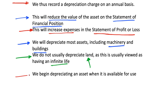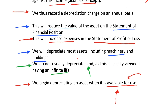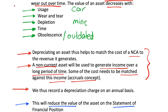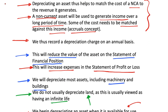The final point is when we begin depreciating an asset — and this is when it is available for use. We can often think of this as when we buy the asset and start using it, but the specific trigger is availability for use. There are circumstances where we buy an asset but can't use it yet, such as waiting for delivery. This makes sense because the key reason for depreciation is usage — so we wait until we can use the asset before we start depreciating it.